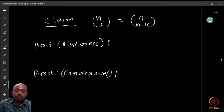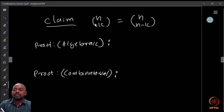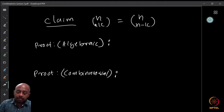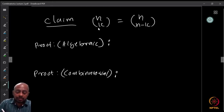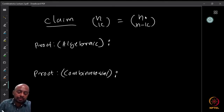We already saw n choose k and its definition: it is n factorial divided by k factorial times n minus k factorial. In one way, we said it counts k element subsets of an n element set. Now the claim is that there is some kind of symmetry with what is called the binomial coefficient: n choose k is precisely equal to n choose n minus k for every k from 0 up to n.